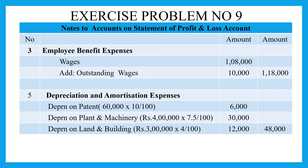This is depreciation and amortization expenses. The first one is depreciation on patent: Rs. 60,000 worth of patent at 10% gives Rs. 6,000. Depreciation on plant and machinery is Rs. 30,000. Depreciation on land and building: Rs. 3 lakh at 4% gives Rs. 12,000. Altogether, depreciation and amortization expenses total Rs. 48,000.